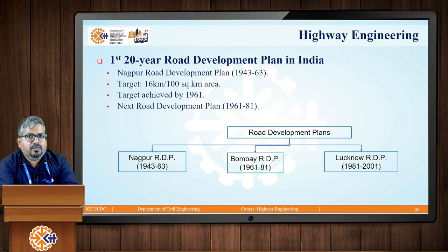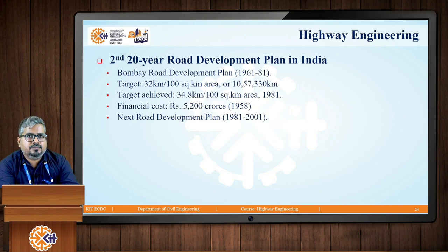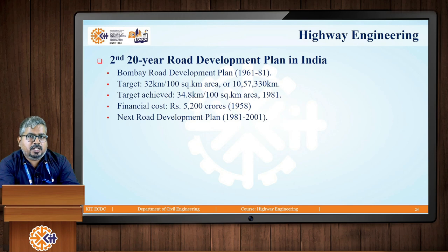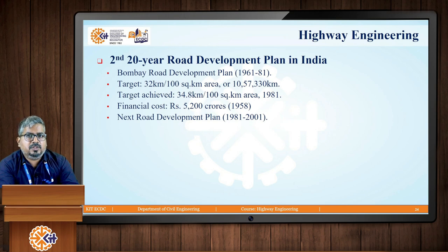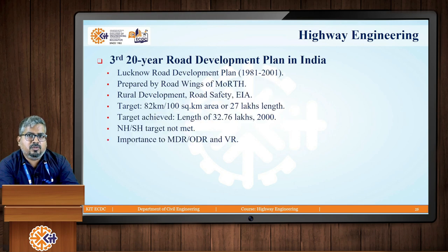The second 20-year road development plan was the Bombay Road Development Plan, starting from 1961 and continuing till 1981. The target road density set for this plan was 32 kilometers per 100 square kilometers, or 10,57,330 kilometers in length. The target was achieved by 1981 with an actual road density of 34.8 kilometers per 100 square kilometers. The financial cost as per the 1958 plan was found to be rupees 5,200 crore. The next plan introduced was from 1981 to 2001, named the Lucknow Road Development Plan.